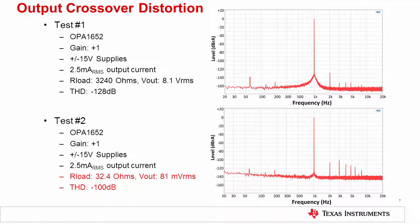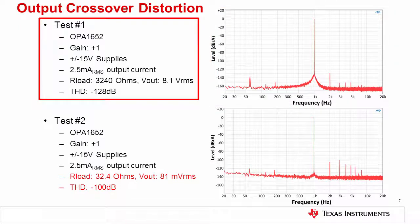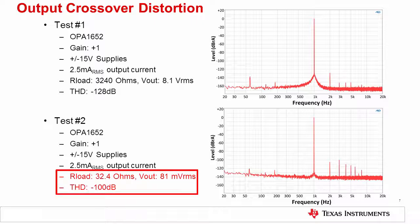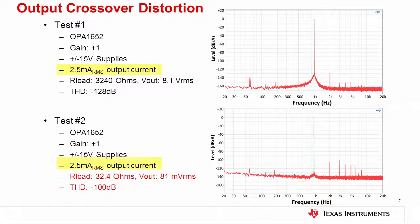To illustrate this point, we again return to the OPA1652. The top plot is the one we showed previously. The op amp is in a gain of plus 1 with plus minus 15 volt supplies. The output is providing 2.5 milliamps RMS into a load impedance of 3.24 kiloohms with an output voltage of 8.1 volts RMS. As we mentioned previously, the distortion is dominated by a second harmonic, and the THD in this case is negative 128 dB. However, if we lower both the output voltage amplitude and the load impedance, keeping the same output current, we get significantly more distortion. Specifically, in this case we reduced the load resistance to 32.4 ohms and reduced the output signal to 81 millivolts. Note that the load current in both test 1 and test 2 was intentionally kept equivalent to show that these effects are not from the output current. The reason for the significant increase in distortion is because the low level output signal is staying almost entirely in the crossover region.